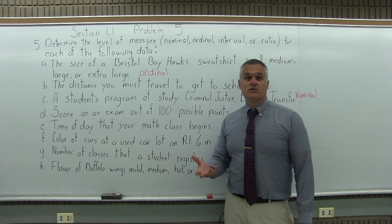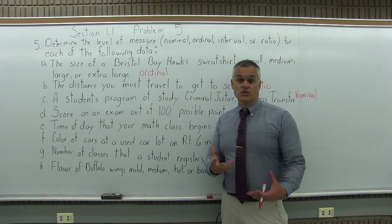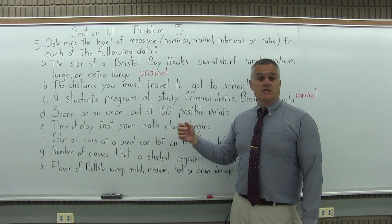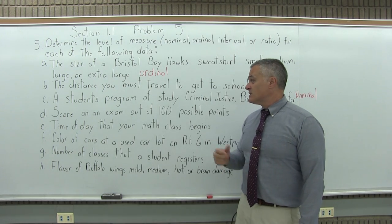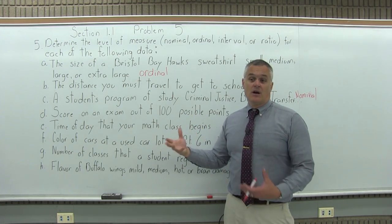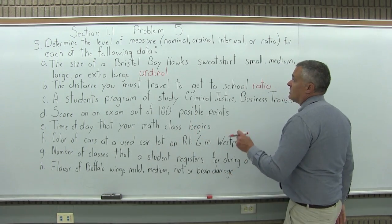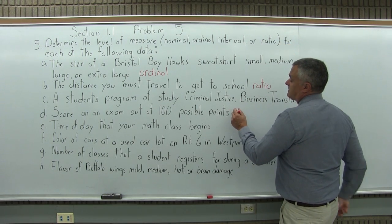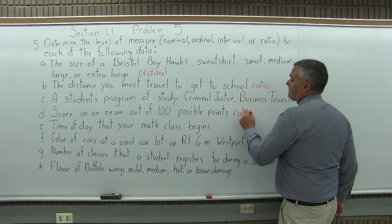Let's say one student gets a 50 and another student gets a perfect 100. Do you think answers you could have? 100 is twice as big as 50. Does it measure twice as much of something? I would say certainly yes, twice as many answers that are correct. So since you have a sensible ratio, a number twice as big measures twice as much of something, this is a ratio level of measure.